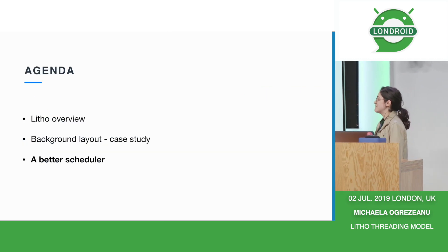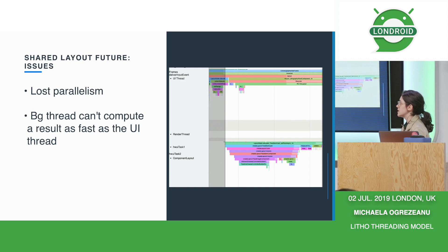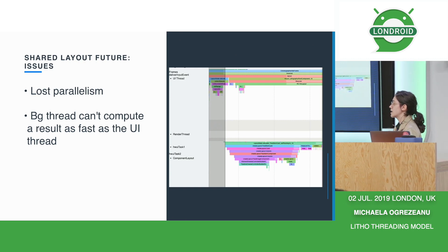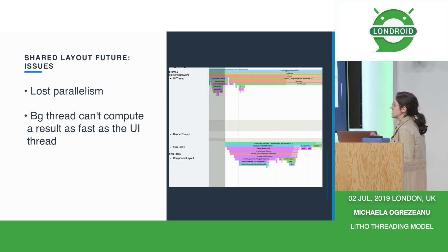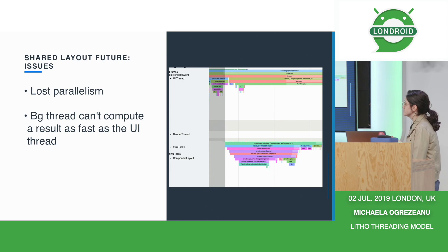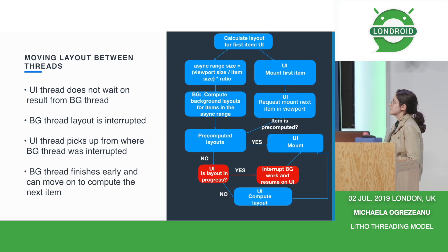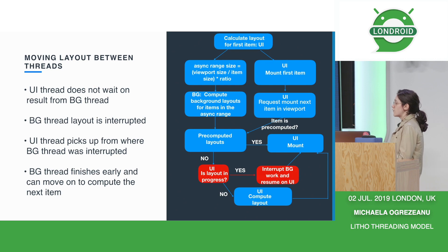This is still not great — we're losing parallelism. Even if we bump up the priority of the background thread as much as possible, it still doesn't compute layouts as fast as the UI thread. We ran experiments and found the background thread is about 10% slower. Android still favors the UI thread in some ways. And of course we're wasting opportunity when we could just be doing work in that idle time.